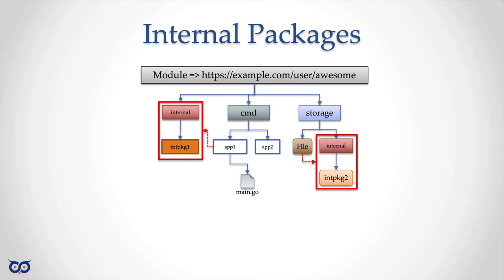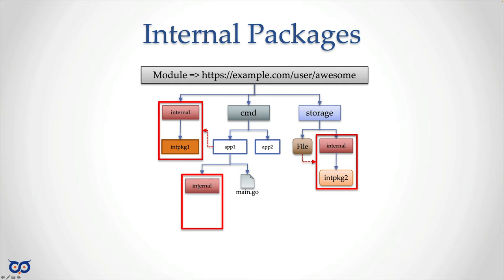So someone could import our module 'awesome', still have access to storage and our file storage package, but not to this internal storage package. One final example: just like storage can have its own internal, app1 might want to keep some internal implementation details private from app2. So app1 creates its own internal directory, let's call it internal package 3. This can be done at any level. You don't have to go too crazy with using internal but it's good to know when you might need it.